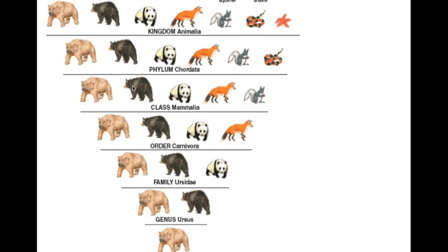Getting more specific, in order Carnivora, the squirrel is not a carnivore, so we leave it off — now we're talking about the grizzly bear, black bear, panda, and fox. Breaking down into family Ursidae, we're talking about the panda, black bear, and grizzly bear. Narrowing to genus Ursus, we're talking about the grizzly bear and black bear. And finally, species Ursus arctos, where we're talking about just one singular organism.